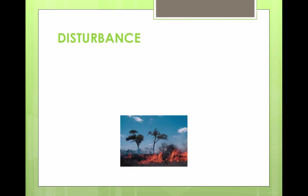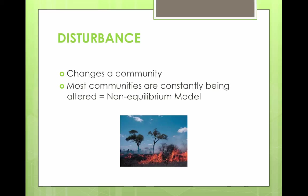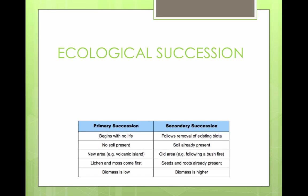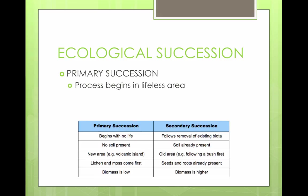A disturbance is an event that changes a community. Most communities are constantly being altered — this is called the non-equilibrium model. The intermediate disturbance hypothesis states that moderate levels of disturbance increase species diversity. Ecological succession is when, after all vegetation has been killed, new organisms move in. In primary succession, like with a volcano erupting, the process begins in a lifeless area, and the area is colonized by a variety of species gradually replaced by others.